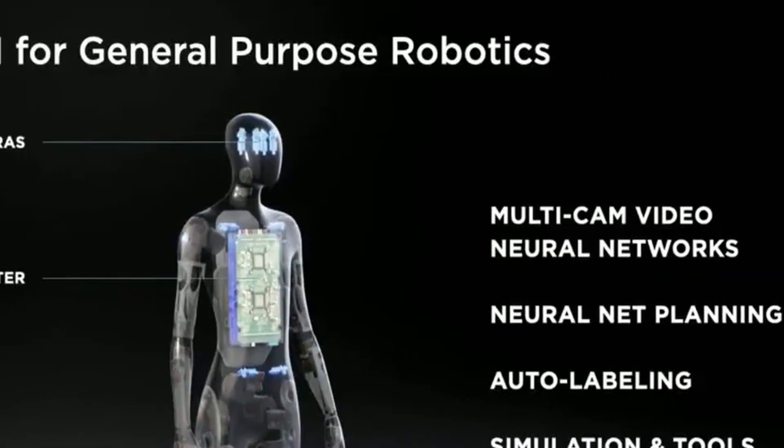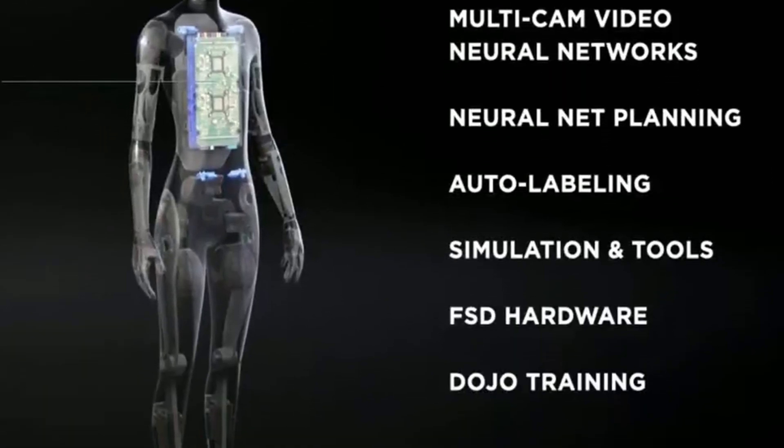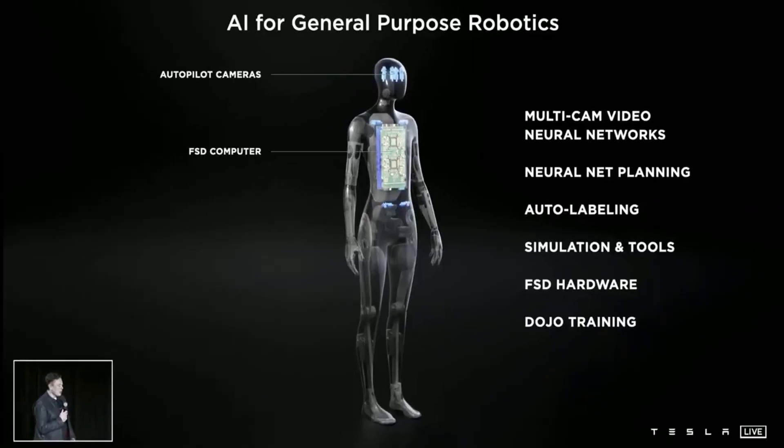The Optimus humanoid robot will utilize Tesla's fully self-driving computer, autopilot cameras, and a full suite of artificial intelligence tools, including neural net planning, object detection, labeling, and simulation capability.